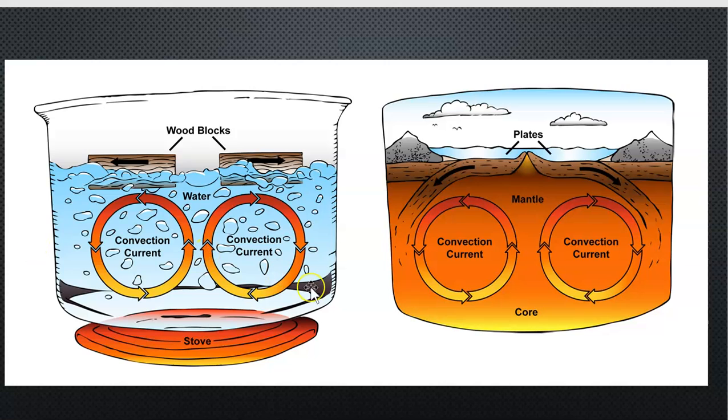Here's another shot that gives you the same idea. It shows the convection currents within the water and then it shows the convection currents within the mantle. Now if we look more closely in this picture we've placed some wooden blocks on top of the water and as those convection currents swirl and twirl and bubble you can see that it pushes the blocks away from each other.